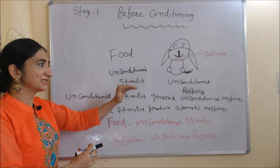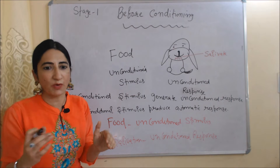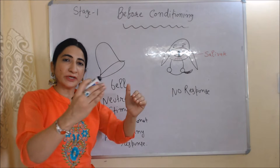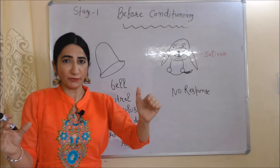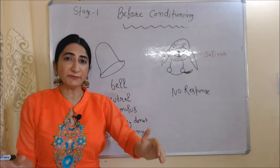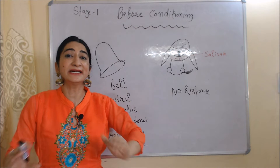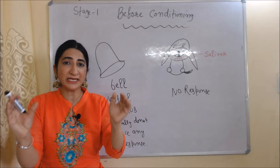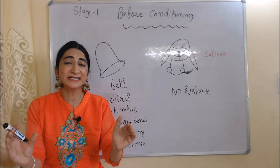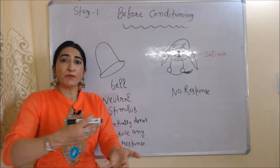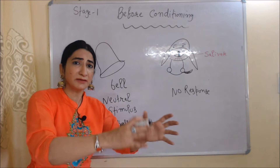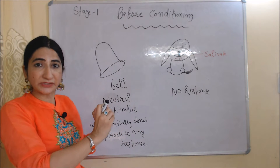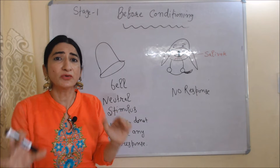In the first stage — before conditioning — we were also ringing a bell in front of the dog. But when we rang the bell, the dog didn't give any kind of response; the dog didn't salivate. Obviously, why should the dog salivate when we are just ringing a bell? So here, the bell is our neutral stimulus, and neutral stimuli initially don't produce any kind of response.